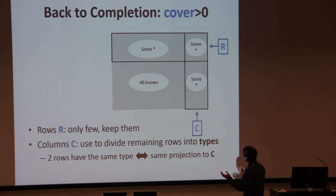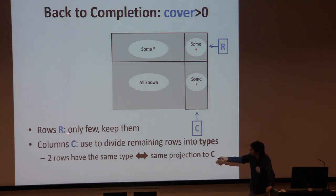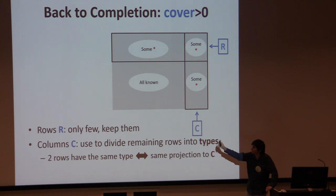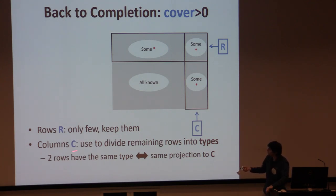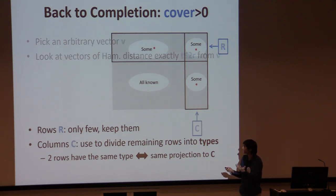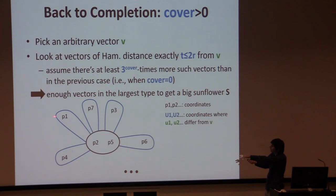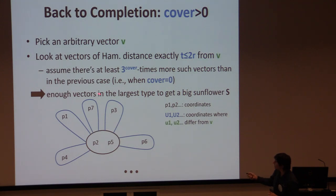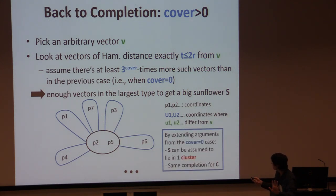For completion, we have a few rows R and a few columns C where together they contain all the missing entries. There are only a few rows R so we keep them in the reduced instance — that's just k extra rows. For columns, we use them to partition and have a more fine-grained look at the sunflowers: we look at the case where even among vectors with the same projection onto columns C, you still get a big sunflower. Once you know they all have the same projection to C, the same argument goes through and you can assume they are all in the same cluster.